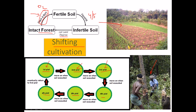In this shifting cultivation technique, we generally do not use pesticides — we just utilize the fertility of the soil for good growth of farming. That is why this kind of shifting cultivation is a major concern nowadays and can no longer easily be done.